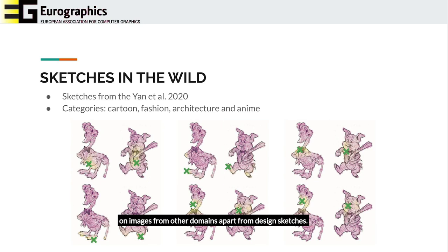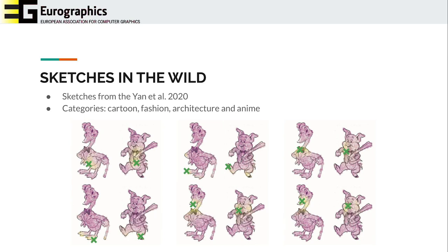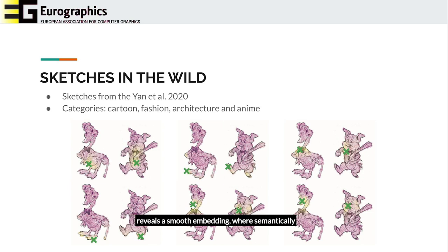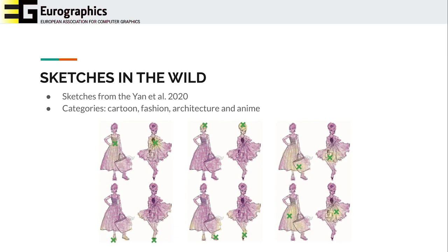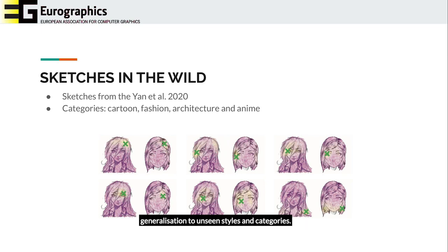We also tested the capability of our descriptors to perform on images from other domains apart from design sketches. We selected pairs of images from the dataset published by Ian et al. 2020 and computed dense matchings sampling between 400 and 1,000 points per image. Here we show some of the correspondences retrieved using SketchZooms indicated by a green cross. Heat maps show the distance to the destination point in feature space. Overall, our learned features produce plausible matchings, and the distance field in feature space reveals a smooth embedding where semantically and geometrically similar points are close to each other. We also tested other sketch categories like fashion, architecture, and anime. Even if none of these categories were used to train our model, our highly diverse training dataset allows this generalization to unseen styles and categories.